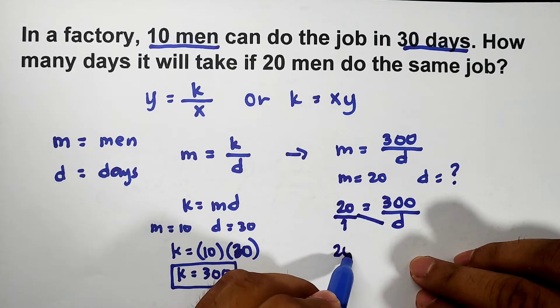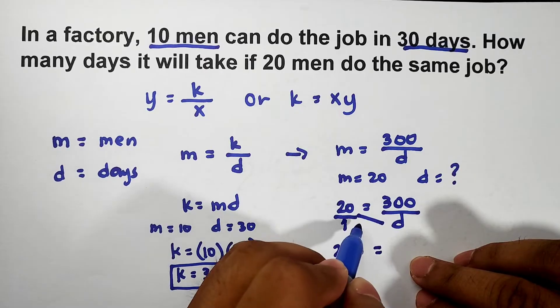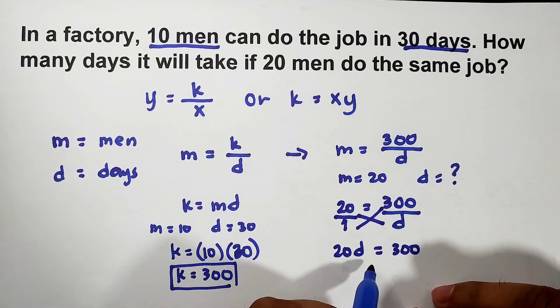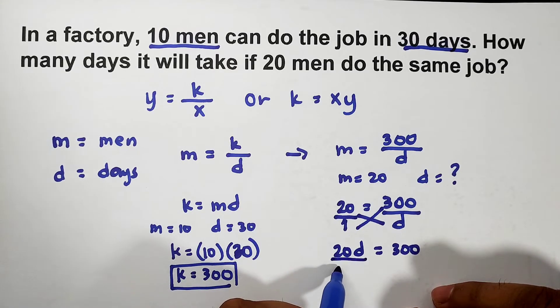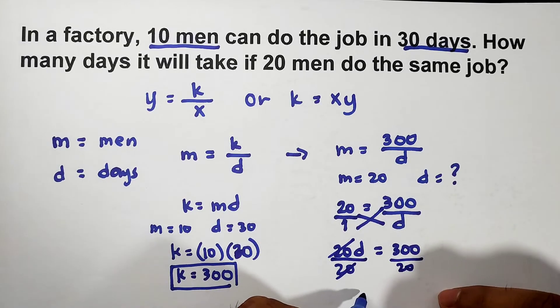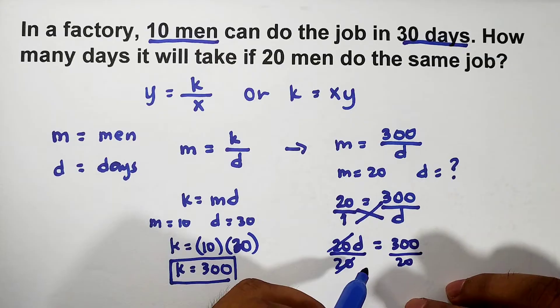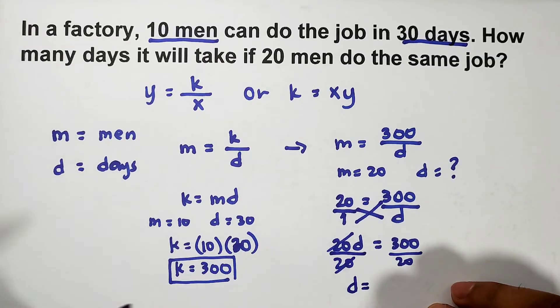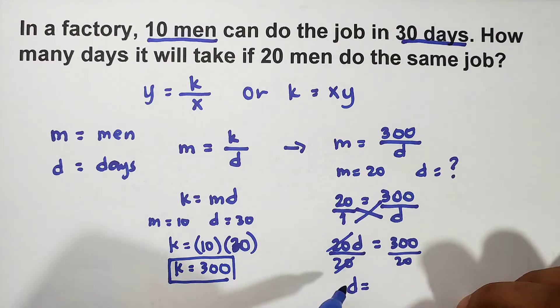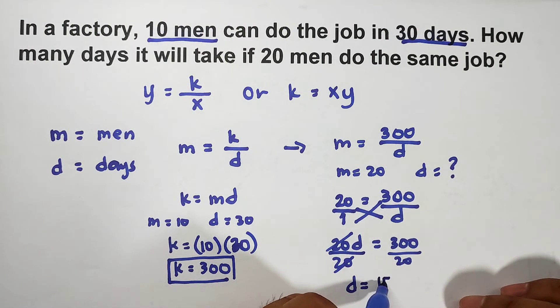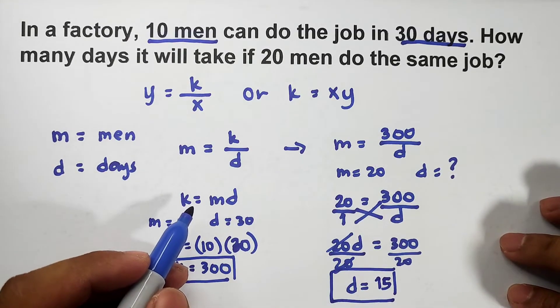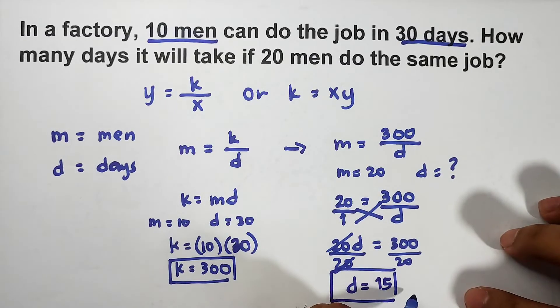20 times d, that is 20d. So now, 1 times 300, that is 300. To solve for d, divide by 20, divide by 20. Cancel natin to. Your d is equal to... what is 300 divided by 20? That is 15. Meaning, it will take 20 men to finish the job in 15 days.